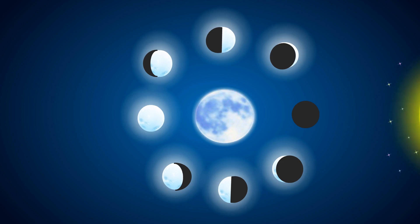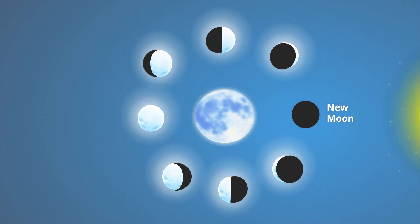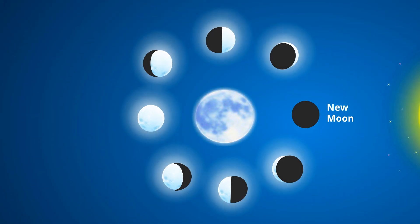The new moon is when the moon cannot be seen because we are looking at the unlit half of the moon.